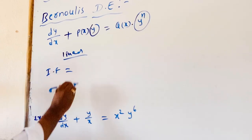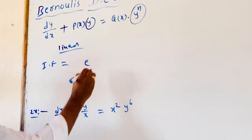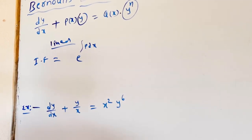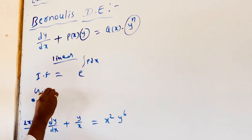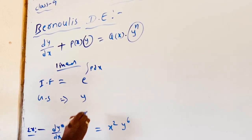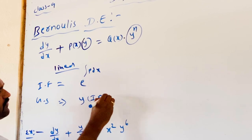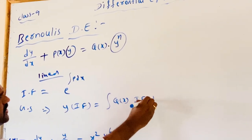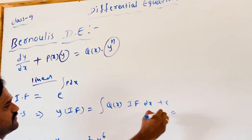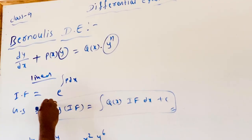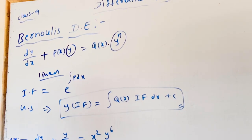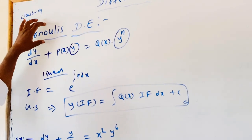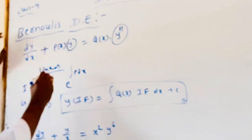First of all, we want to find the integrating factor. The integrating factor is e^(∫P dx), and the general solution is y times IF equals integral of Q(x) times IF dx plus C. This is the general solution for the linear differential equation. So first of all, we want to convert Bernoulli's differential equation into a linear differential equation.